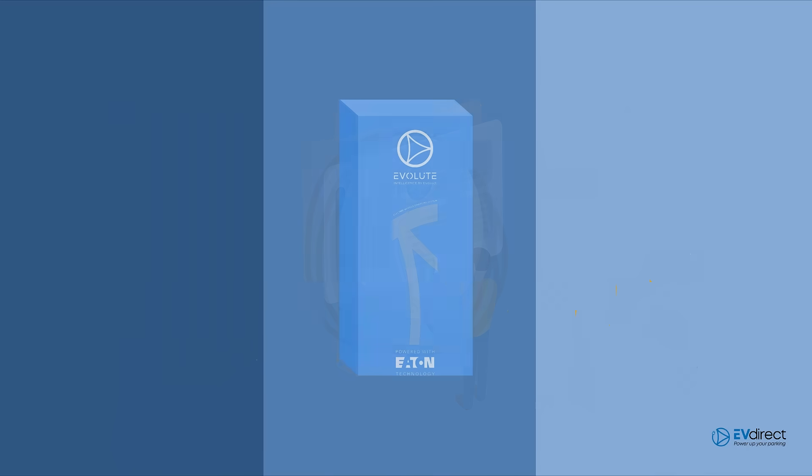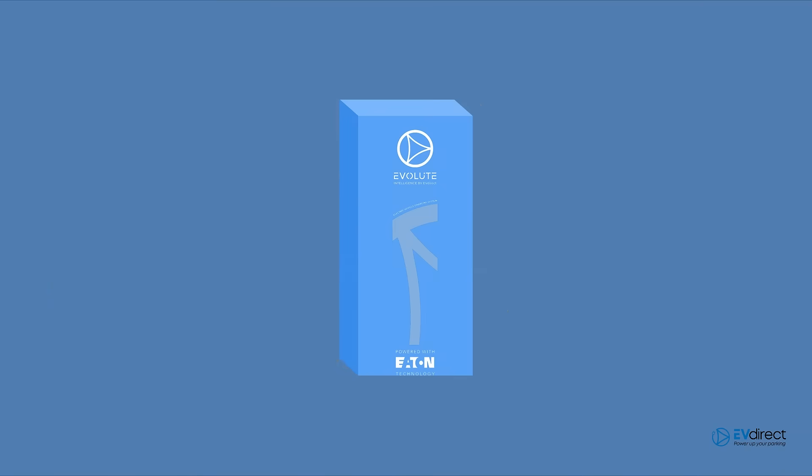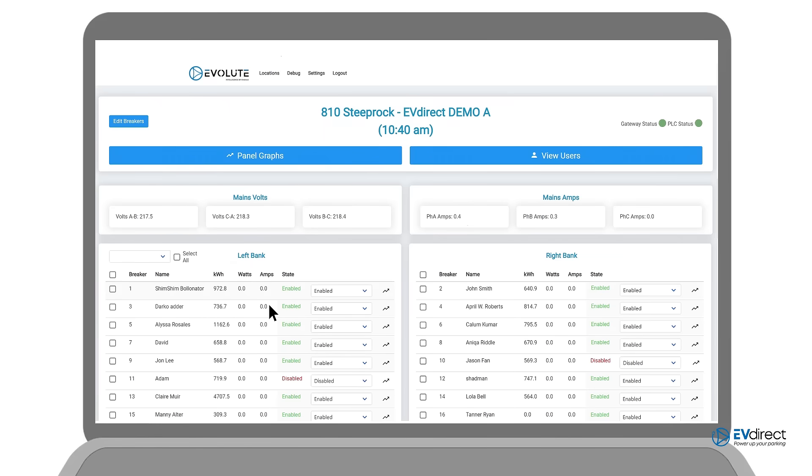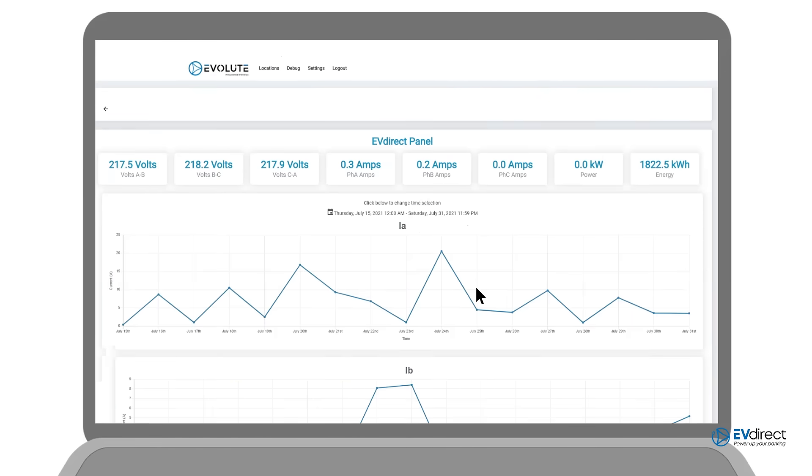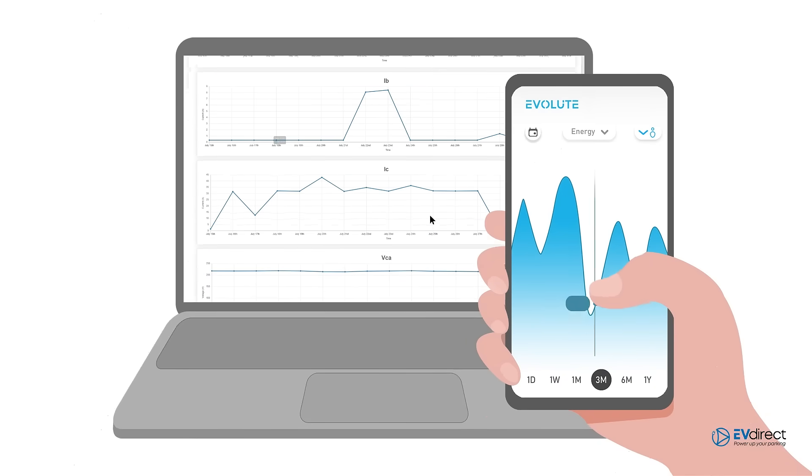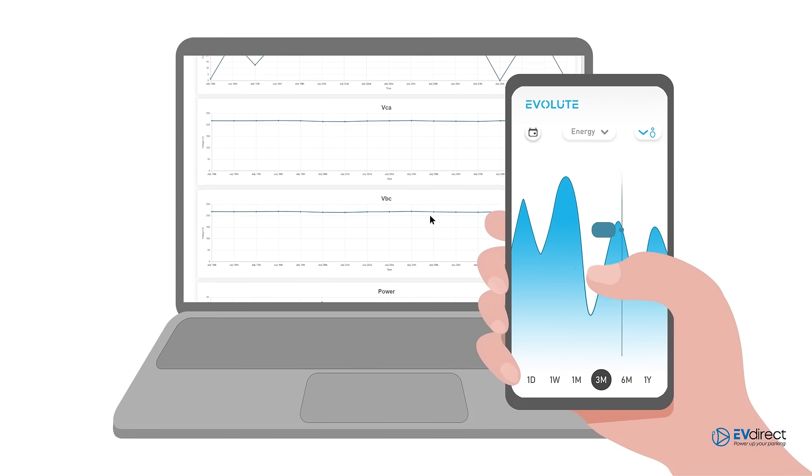EV Direct provides a simple solution with the Evolute. Our easy-to-use software features improve the management and billing experience for both property managers and end users. Property managers are given the ability to use the Evolute's integrated billing, bill in-house, or integrate with utilities option for billing.